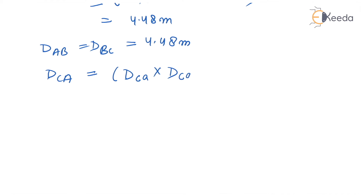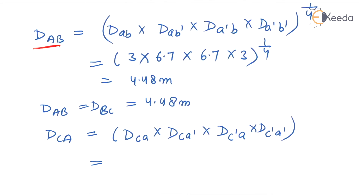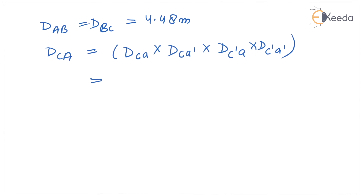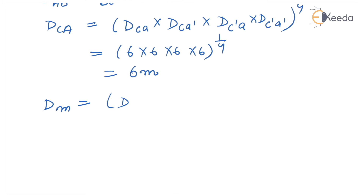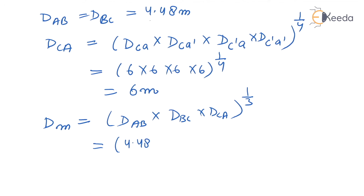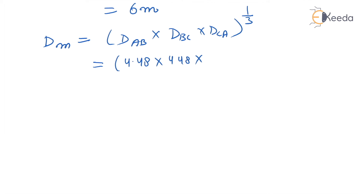For Dca: Dca equals (d_ca × d_c-a' × d_c'-a × d_c'-a') to the power 1 by 4. The distance C to A is 6, C to A' is 6, C' to A is 6, and C' to A' is 6. So Dca equals (6 × 6 × 6 × 6) to the power 1 by 4 equals 6 metres. Therefore Dm equals (4.48 × 4.48 × 6) to the power 1 by 3 equals 4.94 metres.